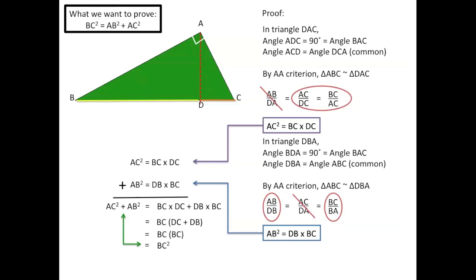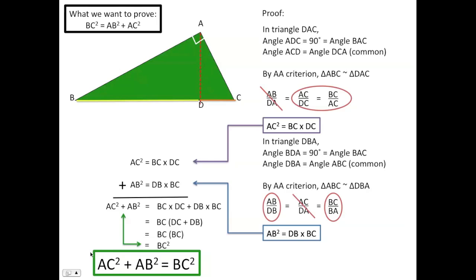A simpler way of writing BC times BC is BC squared. So we have reached the final step of our proof: AC squared plus AB squared equals BC squared, which matches what we wanted to prove. The only difference is that BC squared appeared on a different side of the equal sign, but that is of course the exact same thing. And thus, we have proven the Pythagorean theorem using similar triangles.